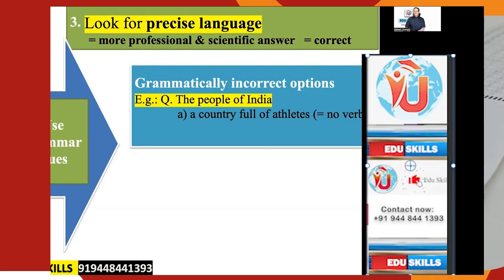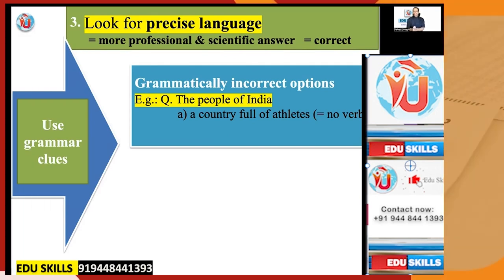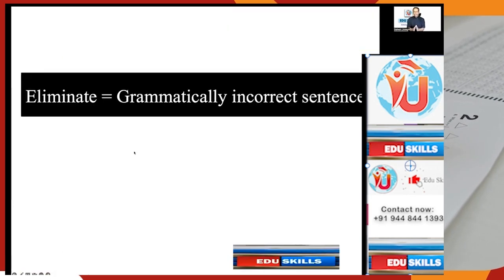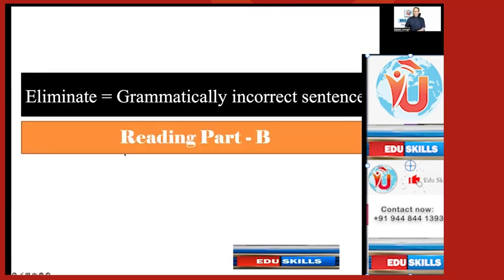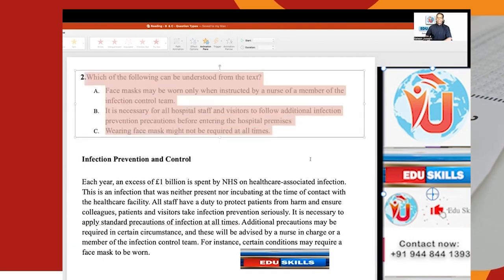Grammatically incorrect options — for example, 'the people of India': one option says 'a country full of athletes.' There is no verb here. You cannot make 'the people of India a country full of athletes' into a sentence. So our focus here is to simply eliminate the grammatically incorrect sentence. We'll listen to the system reading it.